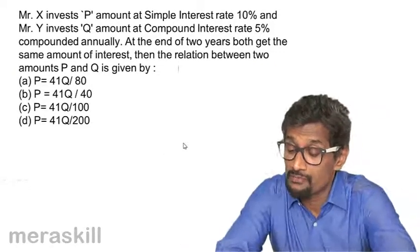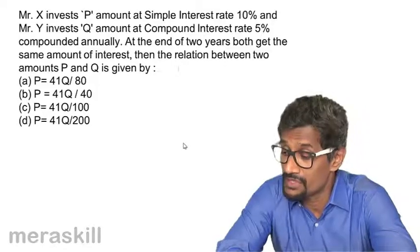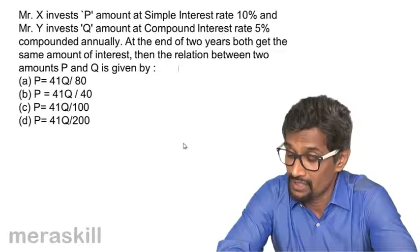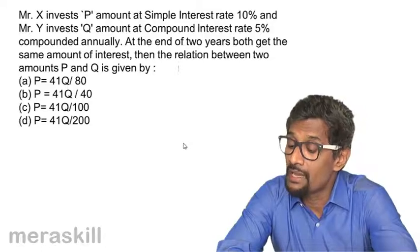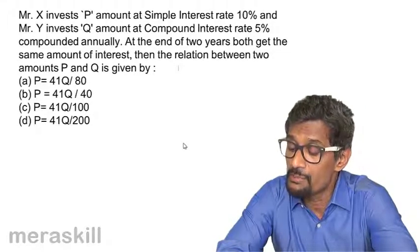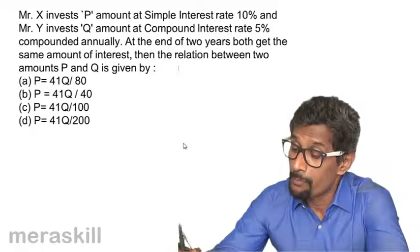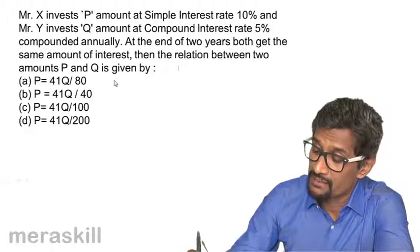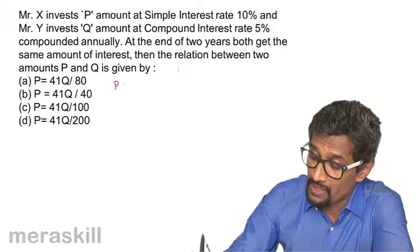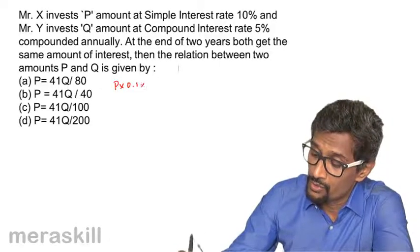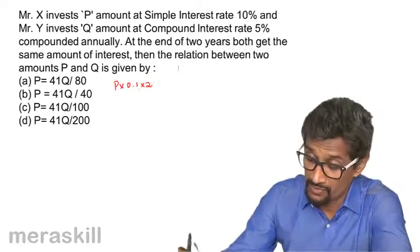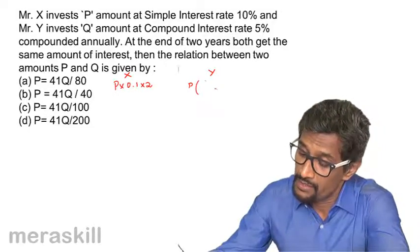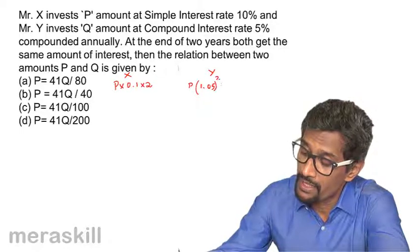Mr. X invests P amount at simple interest rate 10% and Mr. Y invests Q amount at compound interest rate 5%, compounded annually. At the end of two years, both get the same amount of interest. Find the relation between P and Q. Simple interest for X = P × 0.1 × 2 = 0.2P. Compound interest for Y = Q × (1.05² − 1) = Q × 0.1025.